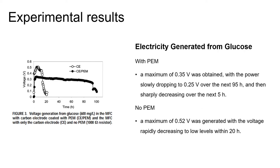Next, electricity generated from glucose in the air cathode microbial fuel cells containing a proton exchange membrane: a maximum of 0.35 volt was obtained, with the power slowly dropping to 0.25 volt over the next 95 hours, and then sharply decreasing over the next 5 hours. In the microbial fuel cells without a proton exchange membrane, a maximum of 0.52 volt was generated, with the voltage rapidly decreasing to low levels within 20 hours.